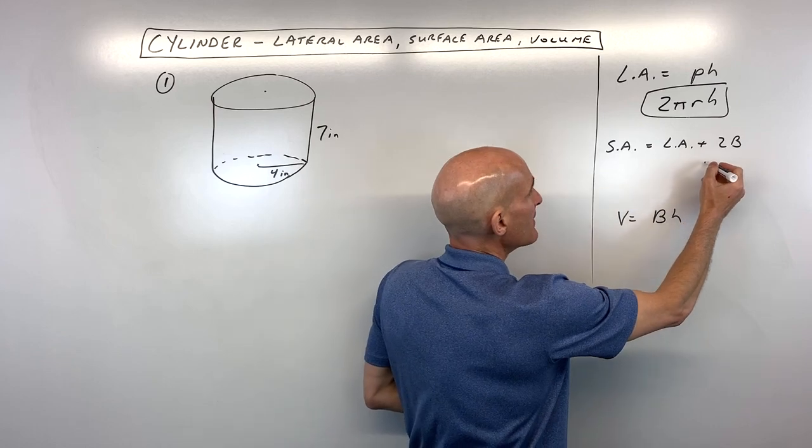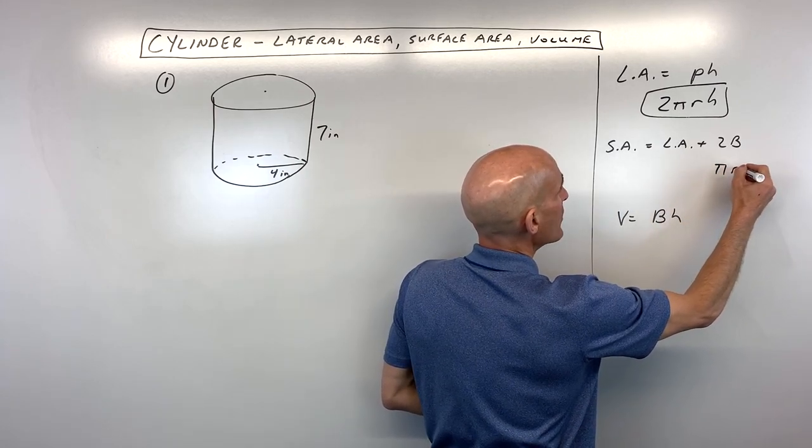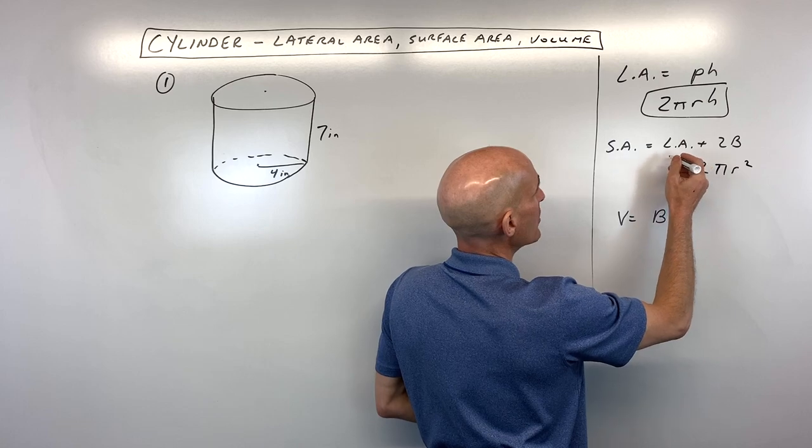But of course, when you find the area of a circle, that's πr². And we have two of those, so 2πr².